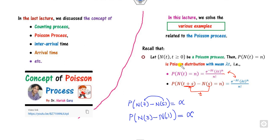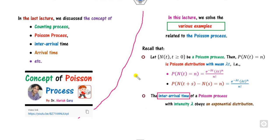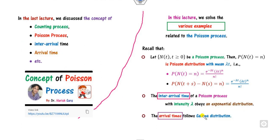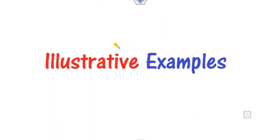This is the Poisson process — remember the time period. The second concept is inter-arrival time, which always follows the exponential distribution, while the arrival time follows the gamma distribution. Once you know it is exponential, you can solve using the PDF or CDF. Now let's start with the 10 examples.